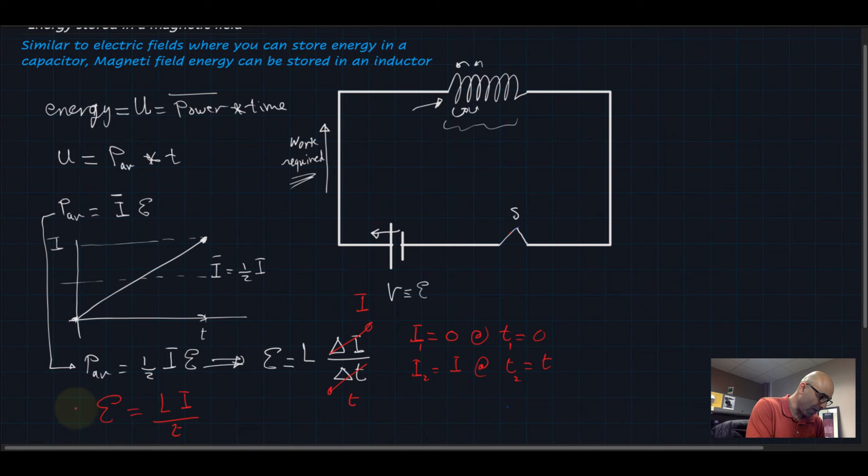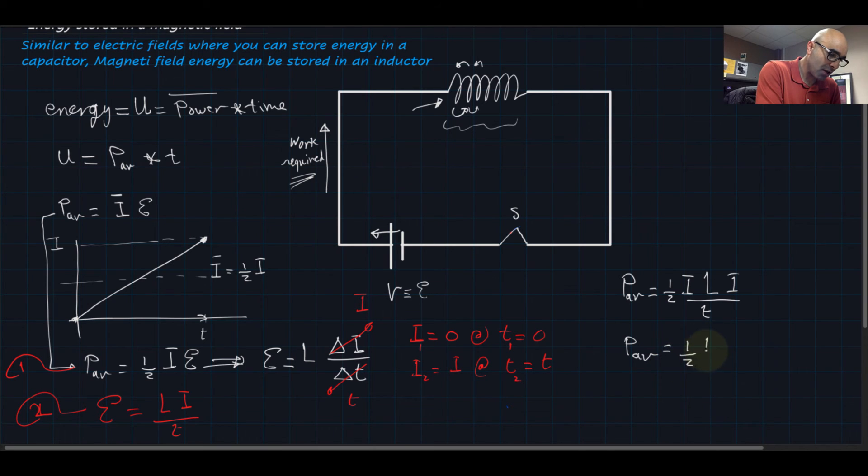Now I have this equation here, which I'm gonna call equation two, and I have this one here I'm gonna call equation one. I'm gonna put them together to find P average. So P average is equal to I average times the electromotive force, and all of this when I put them together is equal to one half times I times L times I divided by T. So P average ends up with this expression. Let me make it a little bit simpler: it's one half I squared L divided by T.